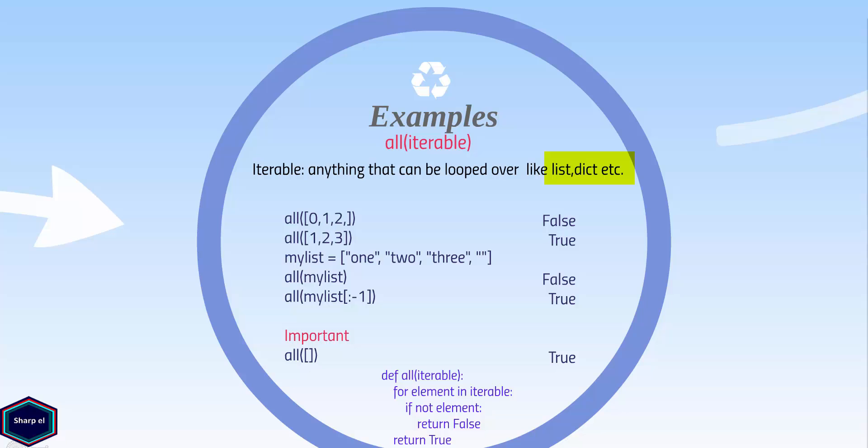Let's see some examples and try to understand all function. In our first example, all function returns false because the first element of the list is zero. And we know all function returns only true when all elements are also true. Whereas in the second example, all function returns true.